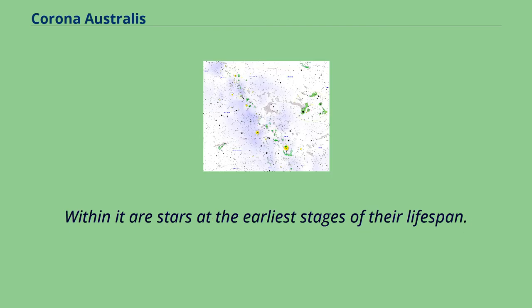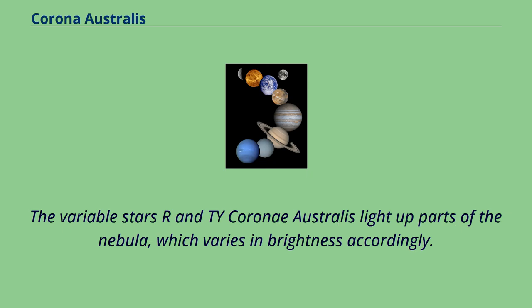Within it are stars at the earliest stages of their lifespan. The variable stars in Corona Australis light up parts of the nebula, which varies in brightness accordingly.